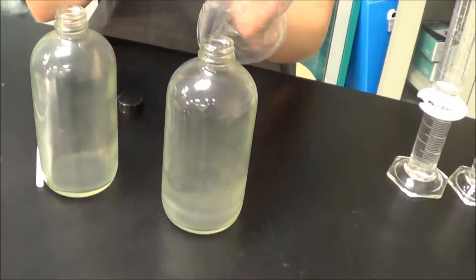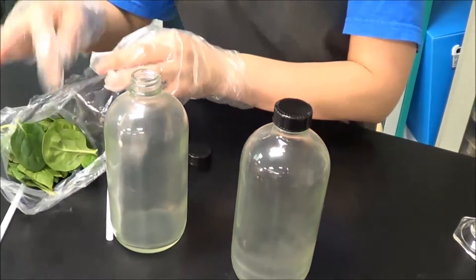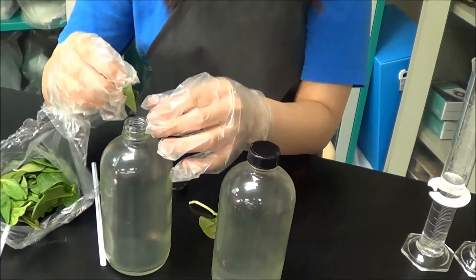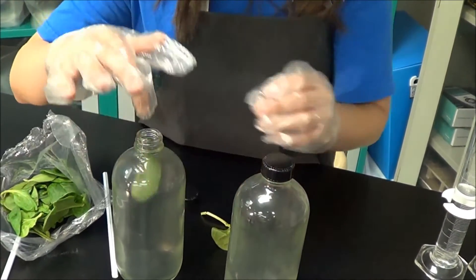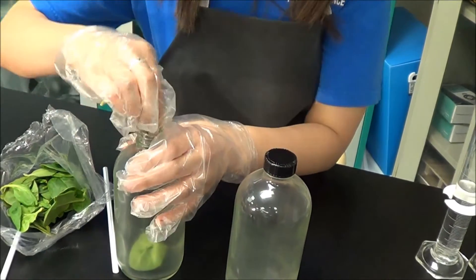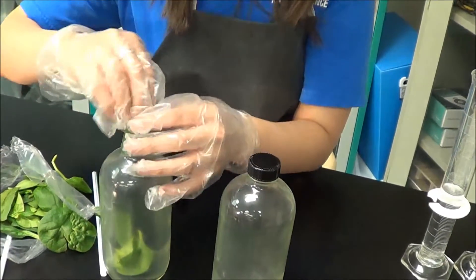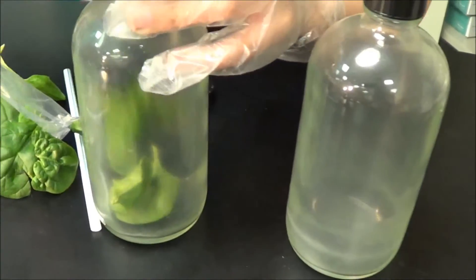And then you close one of them up and the second one, you get a couple of leaves of spinach, put it into the bottle. Just get some leaves, put it in there.